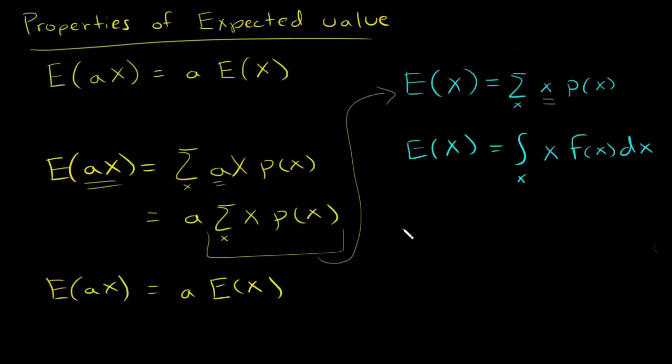And then we can do the same thing if X is continuous. We have aX. We would integrate over X, and instead of having an X there, we would have aX times the probability density function of X dX. Since a is a constant, it can be pulled out, so I have a times the integral X f(X) dX. And this by definition is what the expected value of X is, so this is a times the expected value of X.